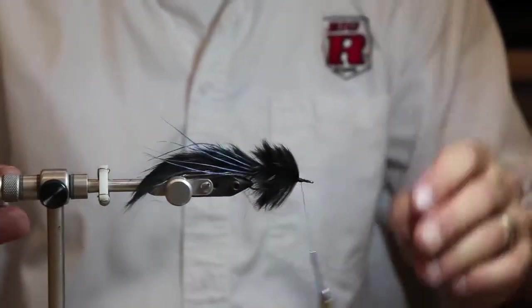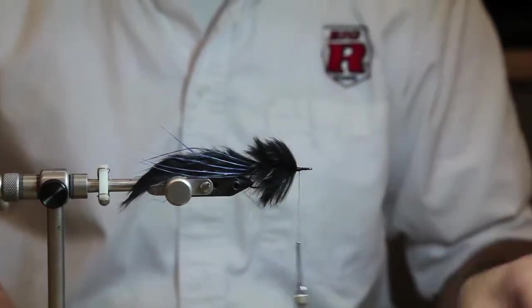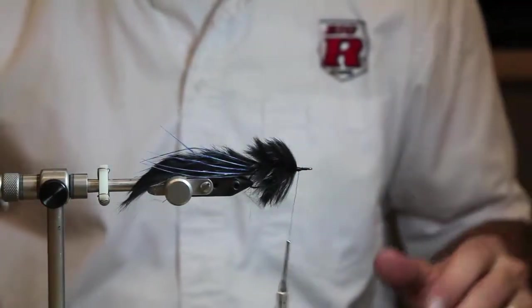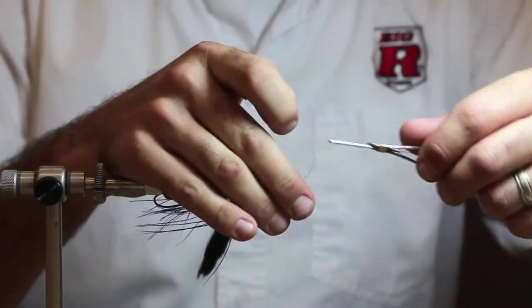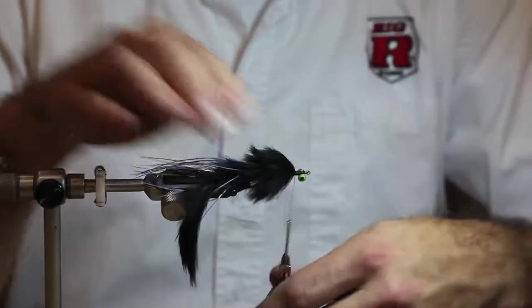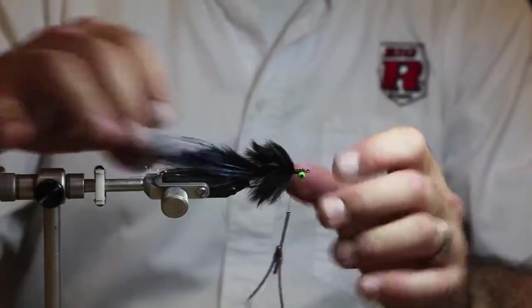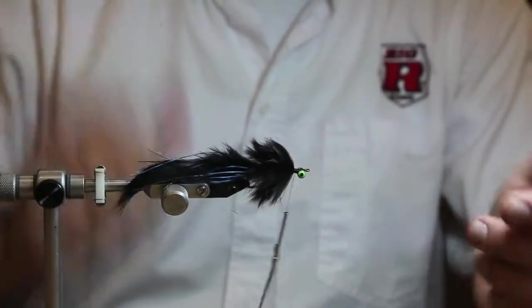Next thing we're going to do, and you can do this at any process, but I'm just going to put eyes on this fly. So I'm going to flip this over. We're going to throw these eyes on the bottom. Once those eyes are nice and secure on there, you can put the eyes on the bottom because that'll help this fly right upright.